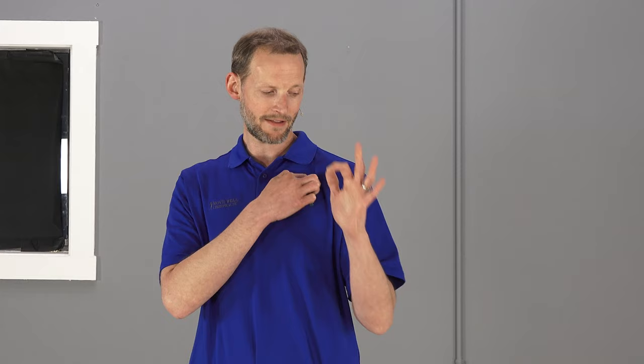So your shoulder blade or your scapula on your back has a little knob that sticks forward. And that, if you palpate around, you can actually find it. If you take your finger and put it just in front of your shoulder joint and just start moving your shoulder forward and back, you'll feel that little knob poke at you.